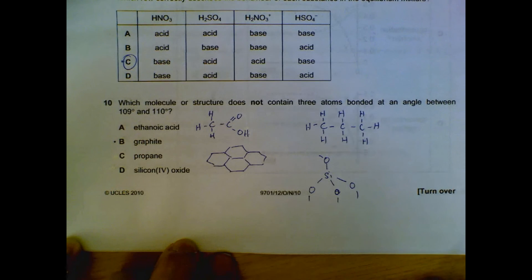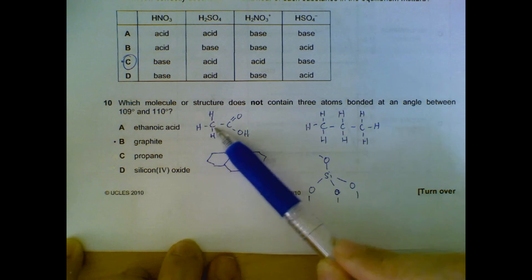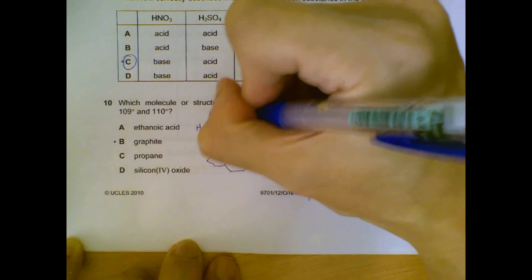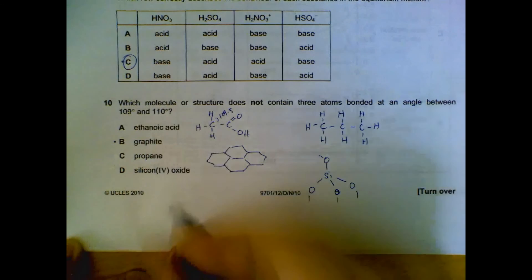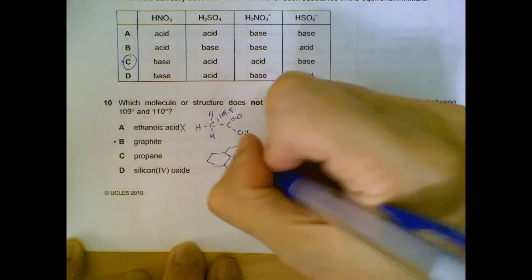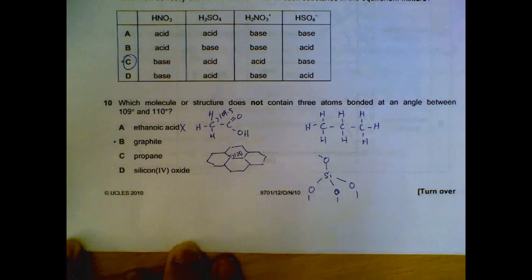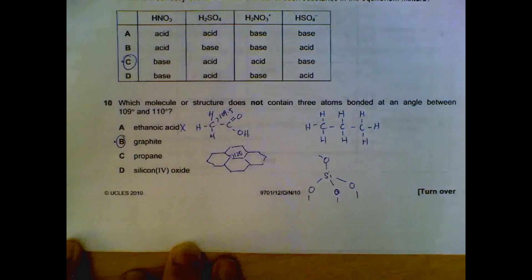Number ten: which molecule does not contain three atoms bonded at the angle between 109 and 110? I draw the structure for ethanoic acid. We have this carbon joined to four in a tetrahedral manner, so this is 109.5, so it fulfills this condition, so that's out. Graphite, this structure, the angles involve 120 degrees, so it doesn't bond in angle between 109 and 110. So graphite is the one we are looking for.